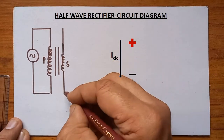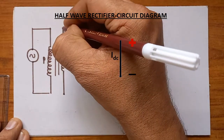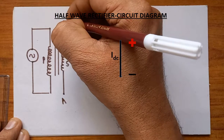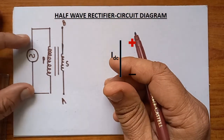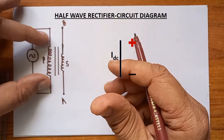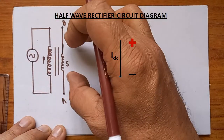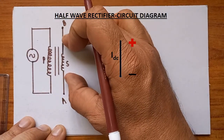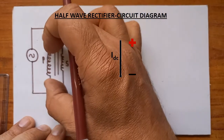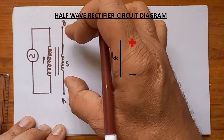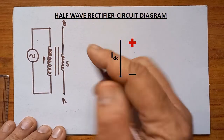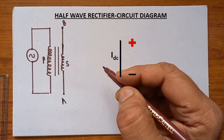These two ends of the secondary are nothing but A and B. If a large voltage is given — for example, 230 volt AC — that will be reduced across the secondary. Compared to the voltage across the primary, the voltage across the secondary will be very less, and the number of turns are also very less.